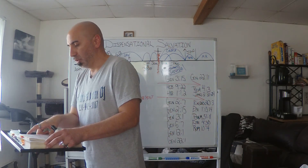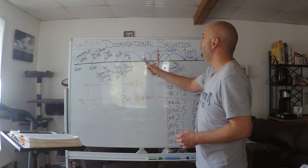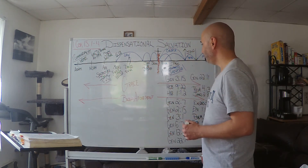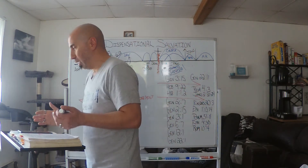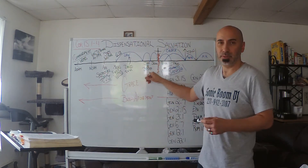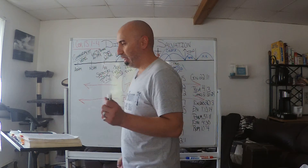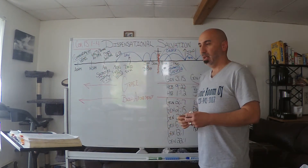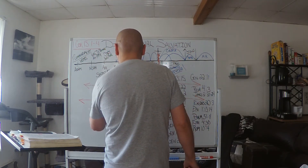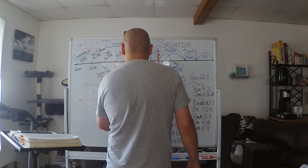Romans 10:4: 'For Christ is the end of the law for righteousness to everyone that believeth.' The law ended when Jesus came on the scene. Up until that point, all these people from the time of Moses were under the law — different from where we're at right now, which is under grace. Now, the next person on our timeline is John the Baptist. Notice it's John the Baptist — not John the Methodist, or John the Calvinist, or John the Lutheran. It's John the Baptist. We'll do a study at some point on the real church.